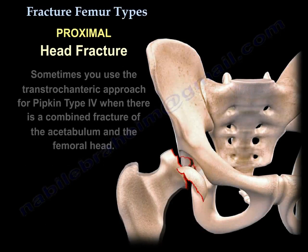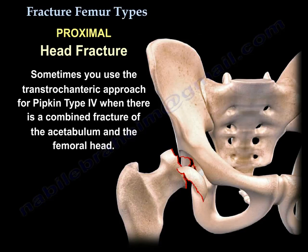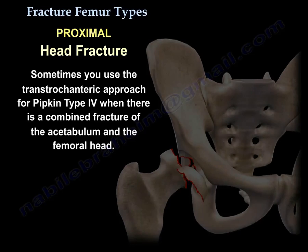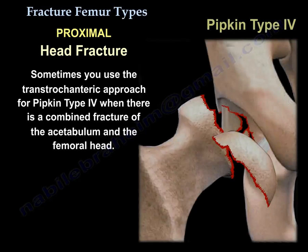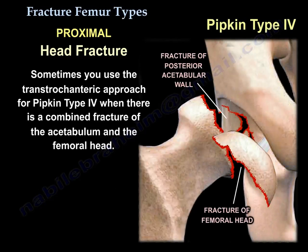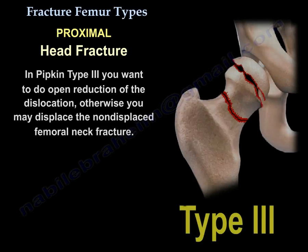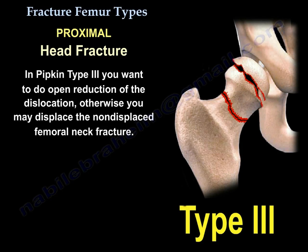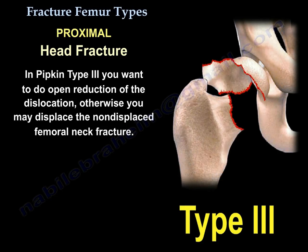Sometimes you use a trochanteric approach for Pipkin type 4, when there is a combined fracture of the acetabulum and the femoral head. In Pipkin type 3, you want to do open reduction of the dislocation, otherwise you may displace the non-displaced femoral neck.